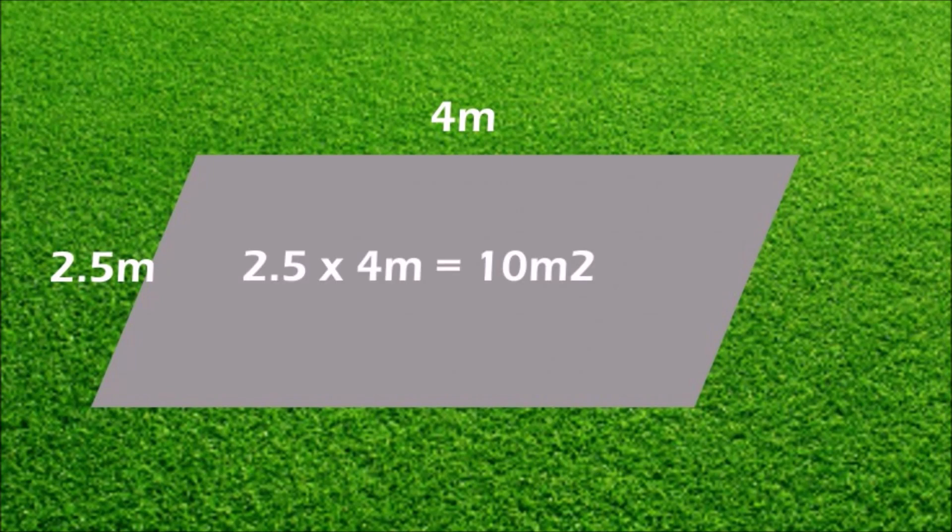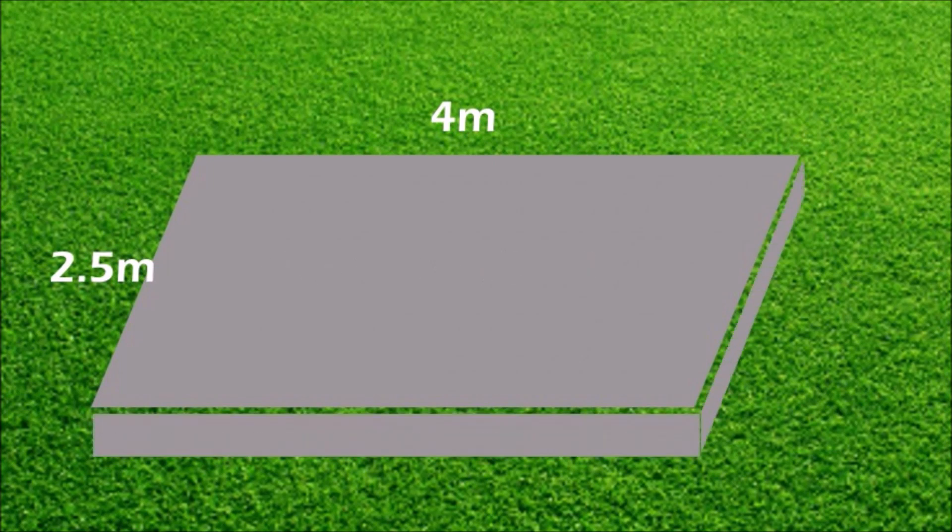2.5 meters by 4 meters gives us 10 square meters, the area of the concrete base. We've got two dimensions: length and width. Now we need to add the third dimension, the thickness of the concrete base. Let's say the thickness is 10 centimeters. When you multiply all three dimensions, you get exactly one cubic meter.